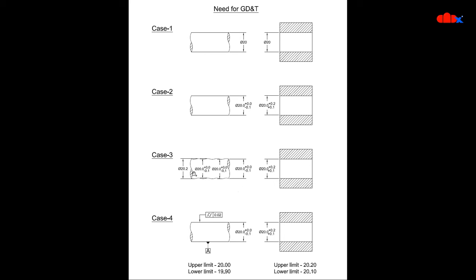I rechecked the drawings to find the error. When I zoomed into the top surface of the shaft, there was some deviation. Checking the dimension in multiple sections, the values were correct in each section, but the overall outer-to-outer dimension was bigger than the lower limit of the hole. So when the shaft diameter is bigger and the hole diameter is smaller, it won't go inside. My size was correct but my shape was incorrect — general dimensioning and tolerancing had no option to fix this, so I adopted geometric dimensioning and tolerancing.